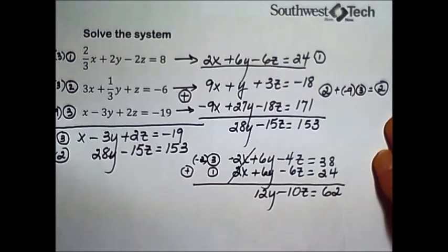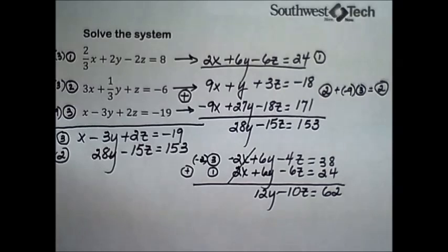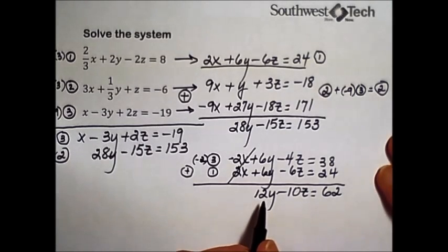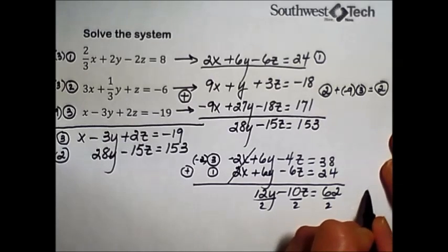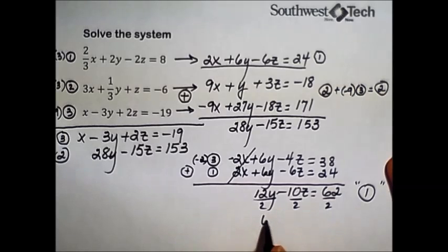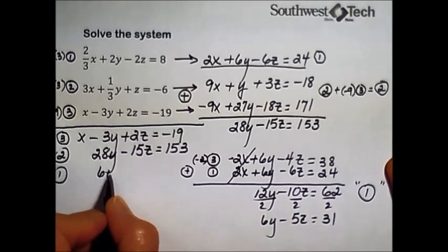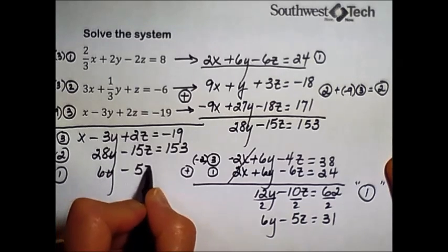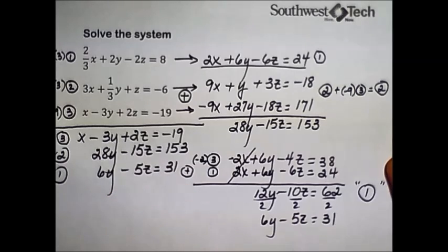If you can reduce equations by dividing through by a common factor, sometimes that's a good idea. And at least every one of these is even, so we can divide every term by 2. So we're going to have 2 for our new version of equation number one, which gives us 6y minus 5z equals 31. It's just smaller numbers to deal with and hopefully is going to help us avoid some arithmetic error as we go along.